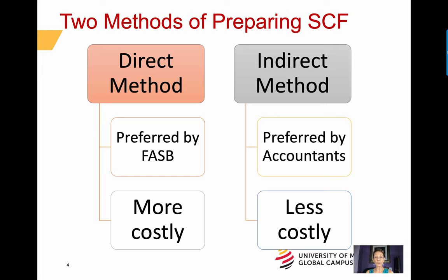A Statement prepared using the Indirect method begins with net income. Non-cash flow expenses, such as depreciation and amortization, are added back to net income. Gains are subtracted from net income and losses are added back. Changes in assets and liabilities either increase or decrease operating activities depending on the nature of the account. The result is net cash provided by or net cash used in operating activities.